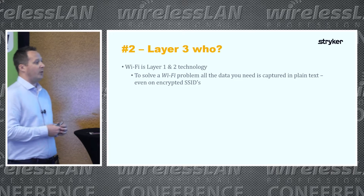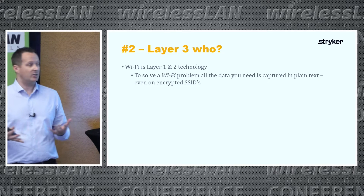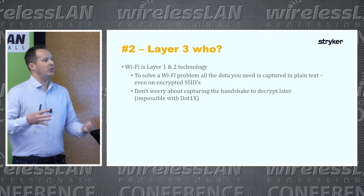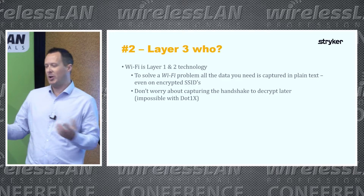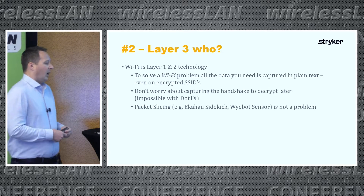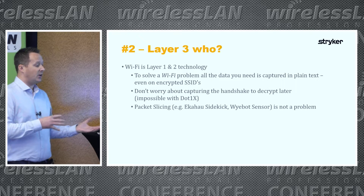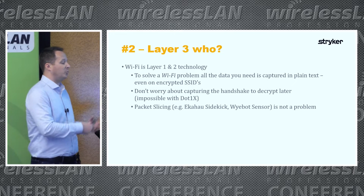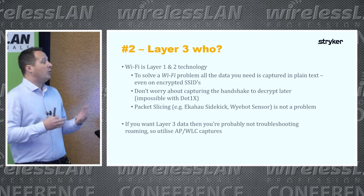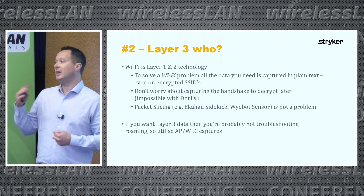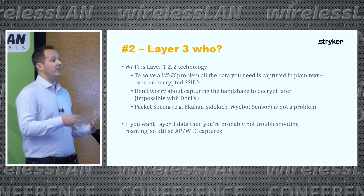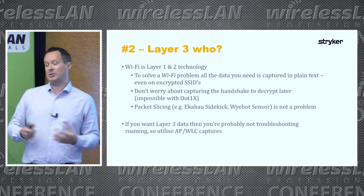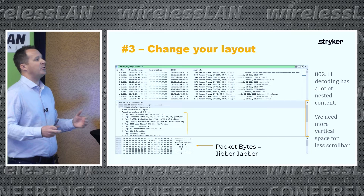Tip number two: Layer 3. Wi-Fi is a Layer 1 and 2 technology. All the clues we need to solve a Wi-Fi problem are on the unencrypted Wi-Fi headers on Layer 1 and Layer 2, even on encrypted SSIDs. Don't worry about capturing the handshake between clients or decoding the payload — we don't need that. Packet slicing, as employed by things like the Sidekick or the Ybot sensor, is fine because they keep the headers we care about. If you do want Layer 3 data — IP, DNS, or DHCP — you probably don't need to capture over the air; you can do that from an AP or controller instead, giving you unencrypted captures of the full stack.